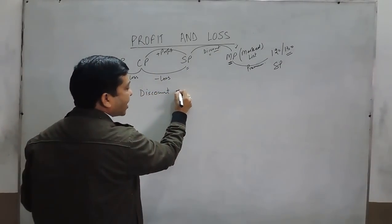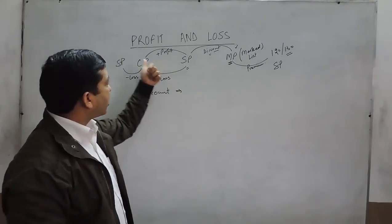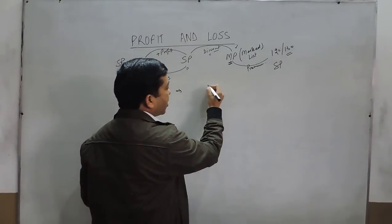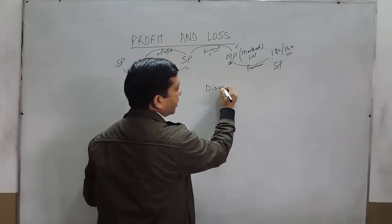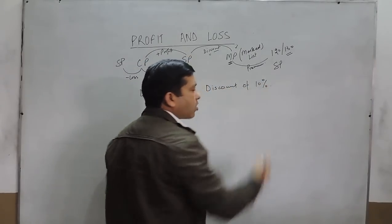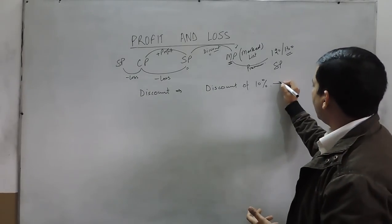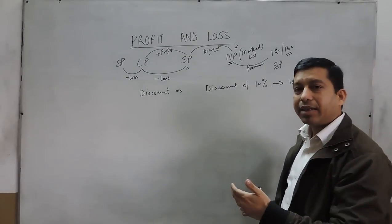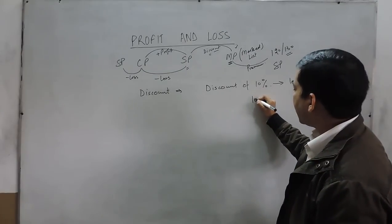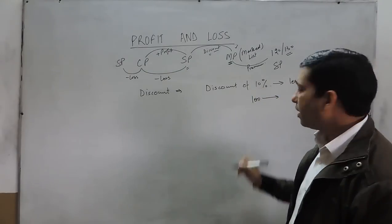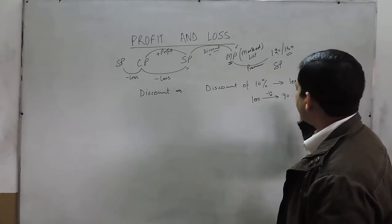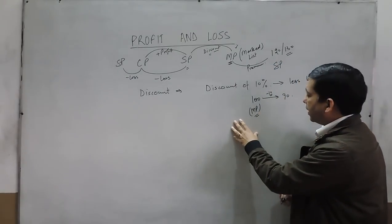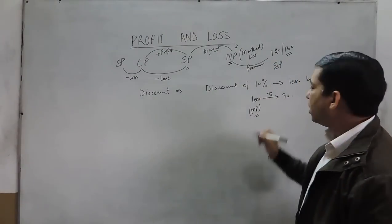Discount is actually just like loss on the cost price — the same is the case with discount, but discount is always on the mark price. Suppose there is a discount of 10%. This can be understood by the logic that it is less by 10%, or decreased by 10%. When I say decreased by 10%, it means that whatever is for rupees 100, we decrease it by rupees 10 and it becomes 90. If some article has 100 rupees written on it and a discount of 10% is given, that is a discount of 10 rupees.